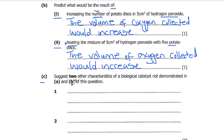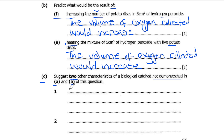Next part: Suggest two other characteristics of a biological catalyst not demonstrated in parts A and B. We've already looked at the effect of increasing enzyme concentration and the effect of temperature. Two characteristics not yet observed are: first, the effect of pH on enzyme-catalyzed reactions, and second, the effect of inhibitors and co-factors on enzyme-catalyzed reactions.